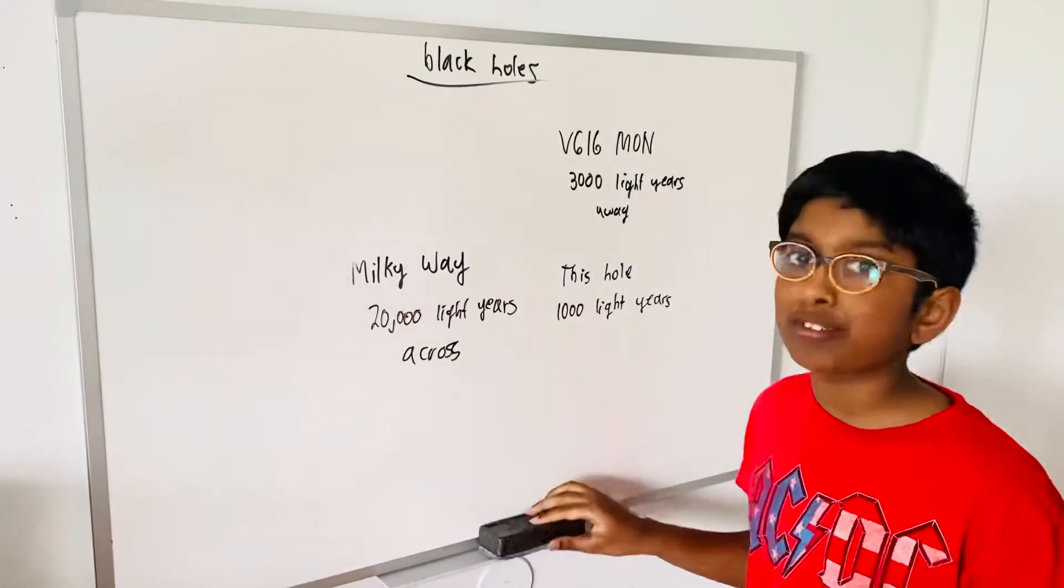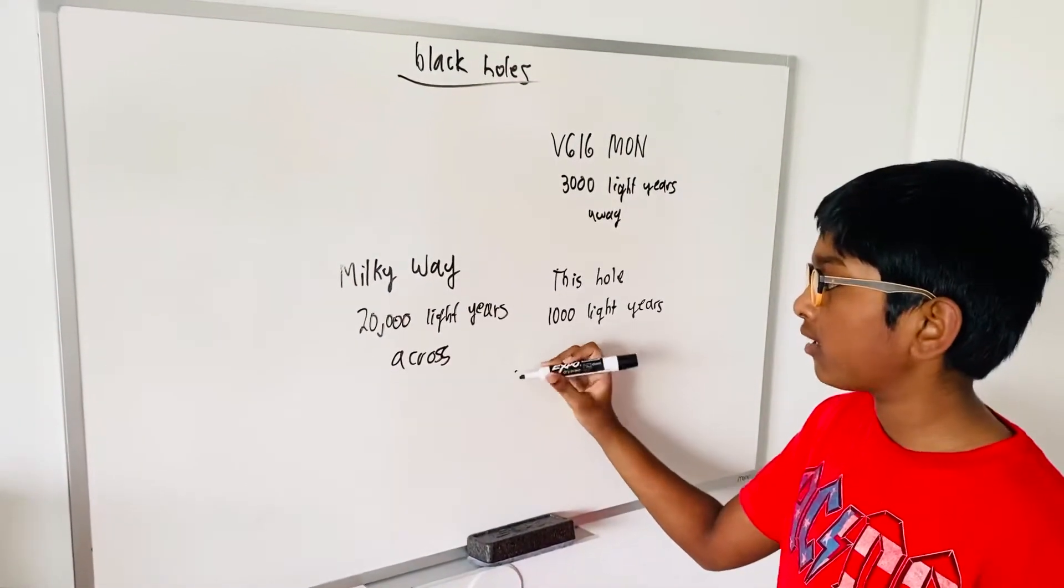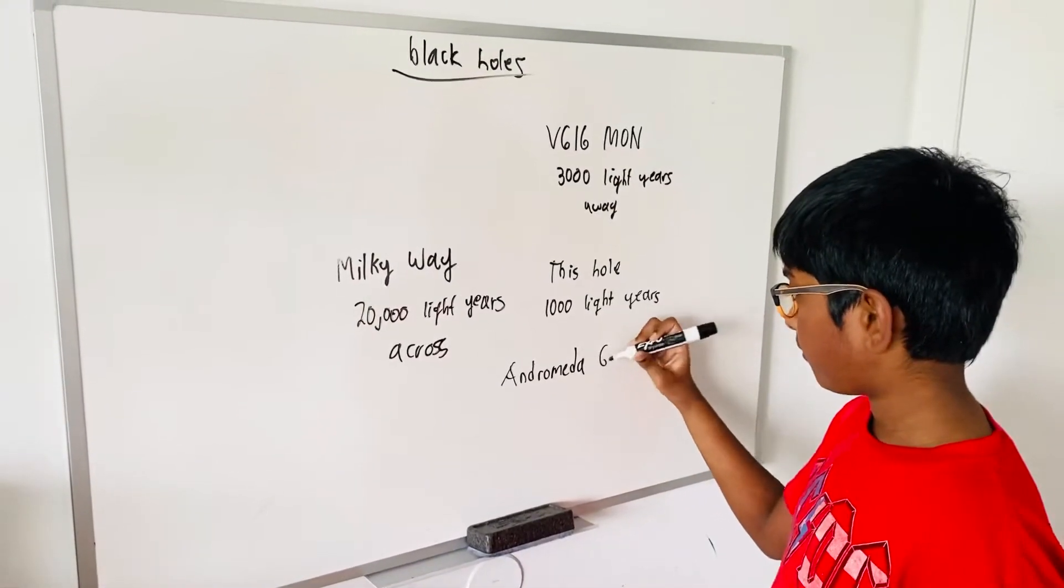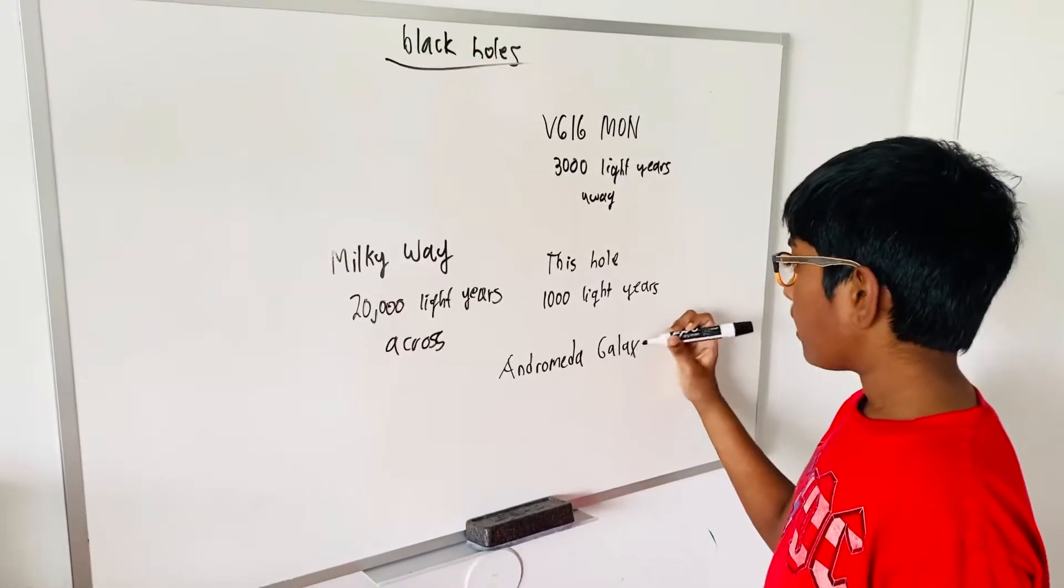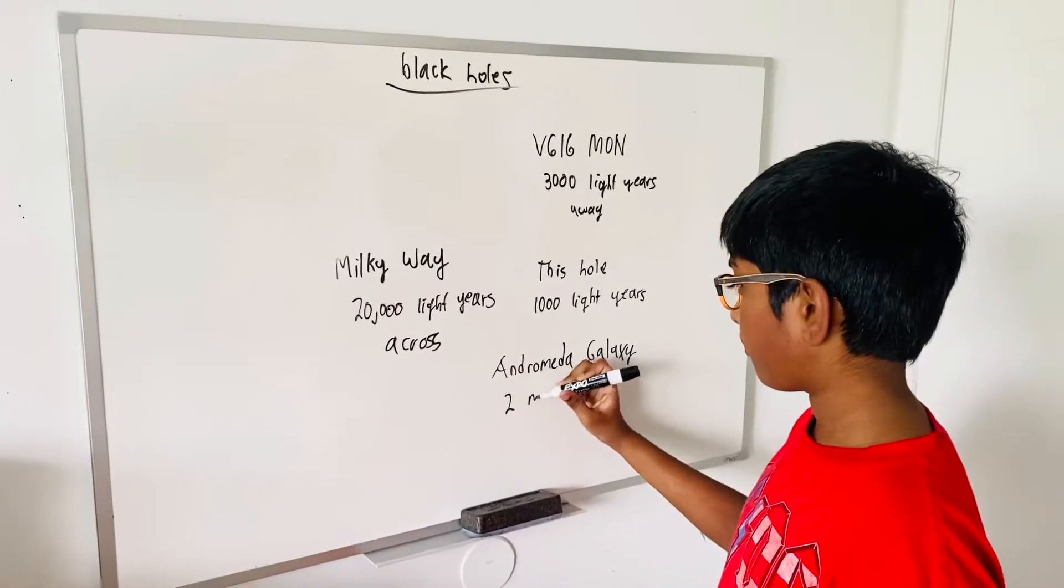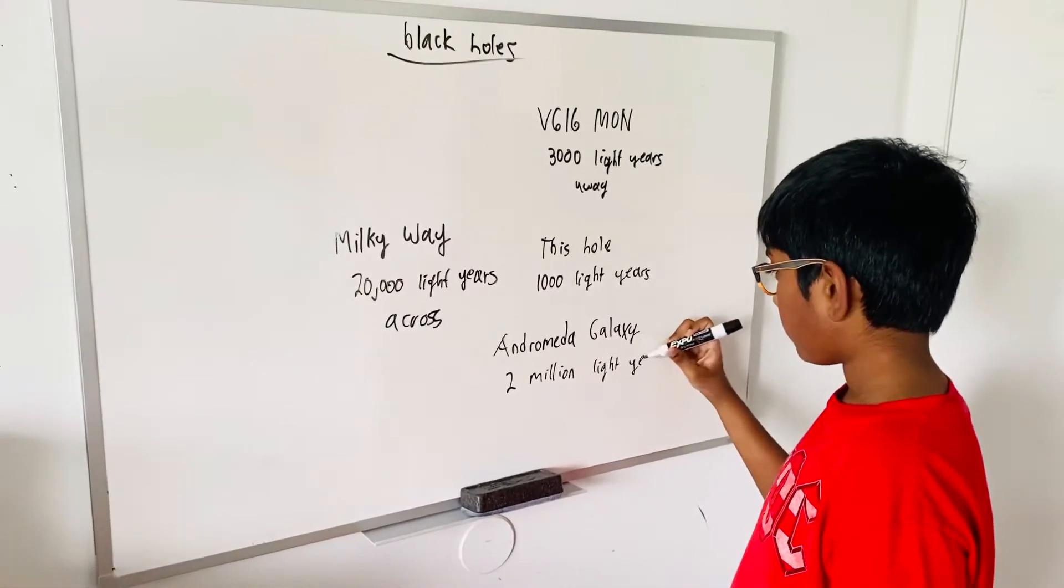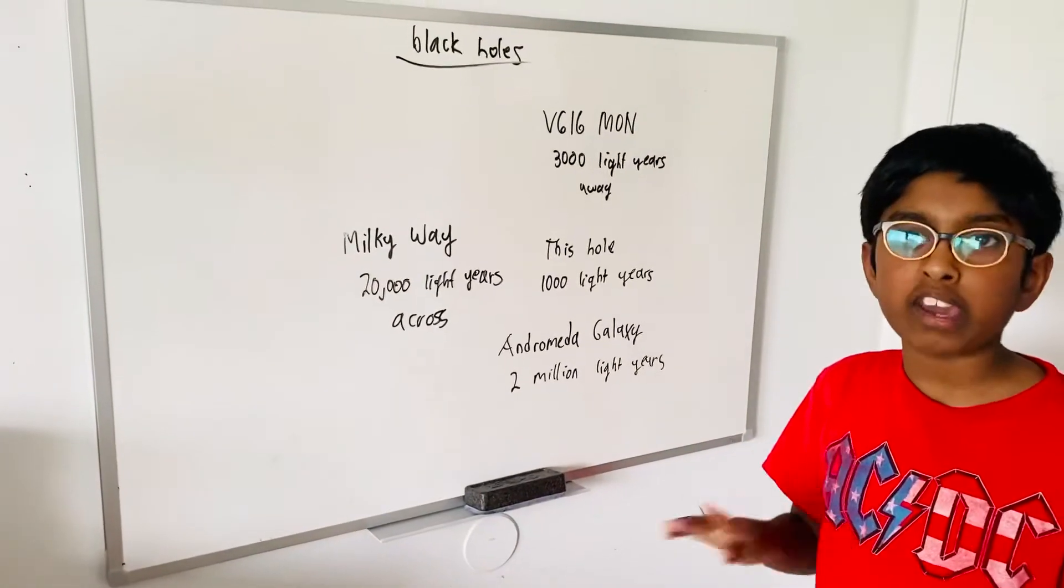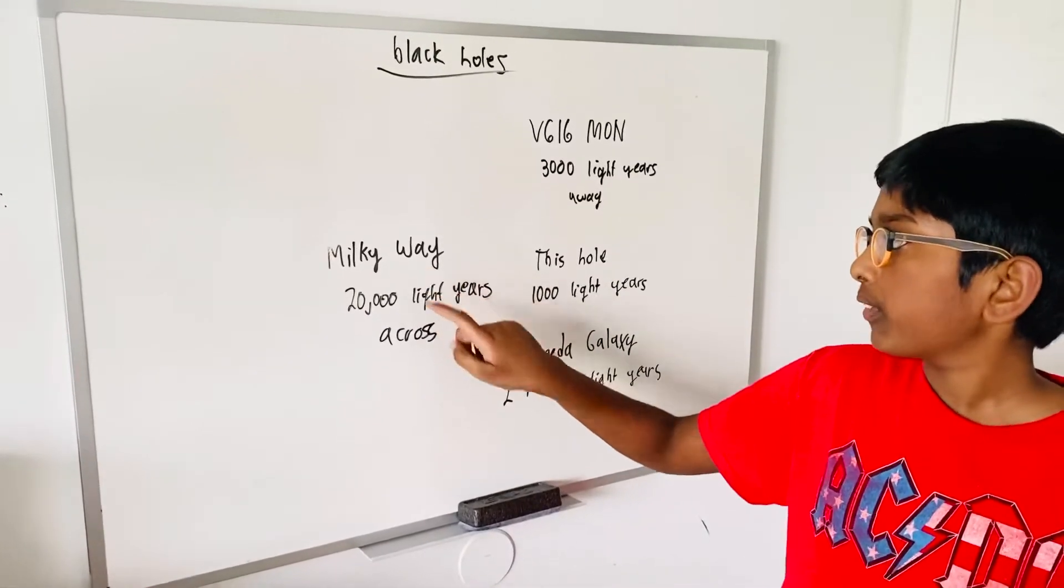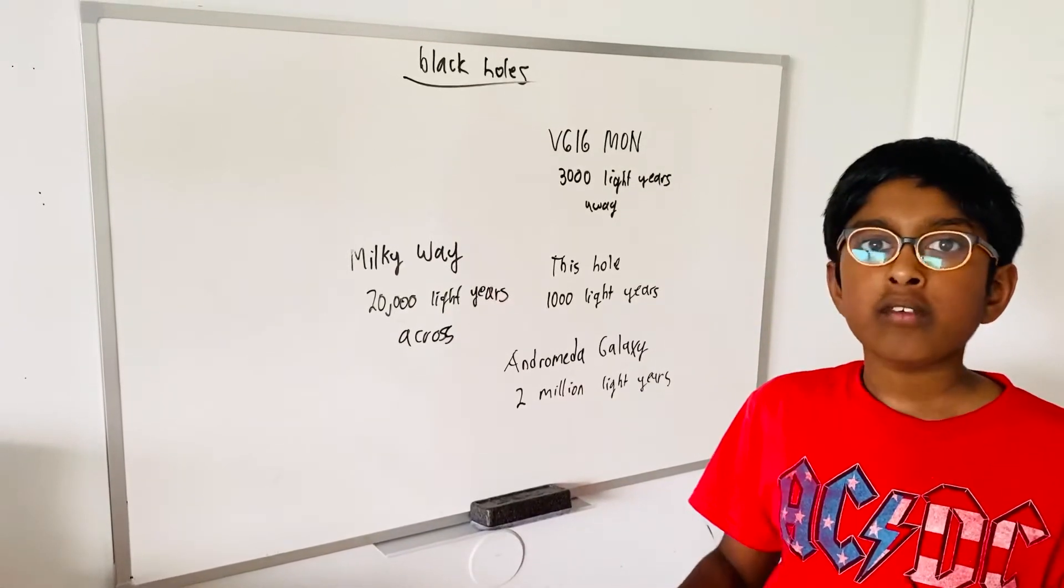Now let's talk about what black hole is coming towards us. There's a galaxy called the Andromeda galaxy. The Andromeda galaxy is located two million light years away, but it's coming close to our Milky Way. It's going to collide with the Milky Way in about four billion years.